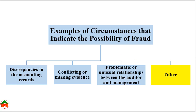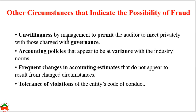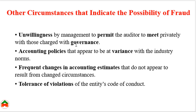Now we look at other factors that indicate the possibility of fraud. When management is unwilling to permit the auditor to meet privately with those charged with governance — if the auditor wants to meet the personnel responsible for governance and management denies permission — that unwillingness also indicates the possibility of fraud. Accounting policies that appear to be at variance with industry norms also indicate fraud risk.